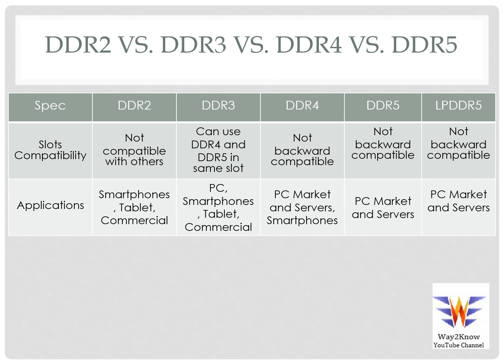For applications: DDR2 was intended for smartphones, tablets, and commercial embedded applications. DDR3 was targeted at PCs, smartphones, tablets, and commercial use, and is still predominantly used in most motherboards. DDR4 was specifically developed for the PC market, servers, and smartphones. DDR5 is currently for the PC market and servers, while LPDDR5 is intended for smartphones and tablets.